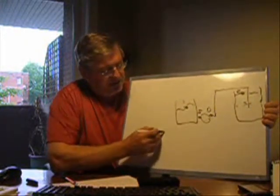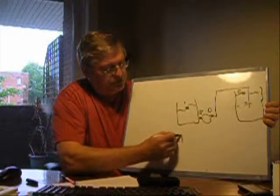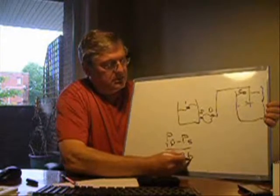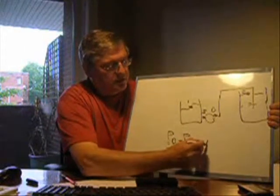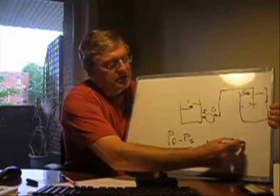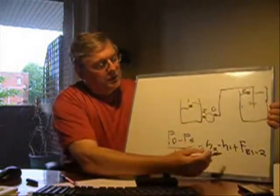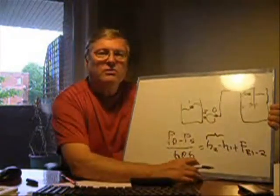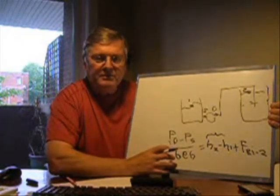The difference in pressure — pressure at D minus pressure at S — divided by density, is going to be equal to the difference in height we need to achieve: getting the water higher up. So that's H2 minus H1 plus the friction head between points 1 and 2. This difference in height is known as static head, and this is called the friction head.